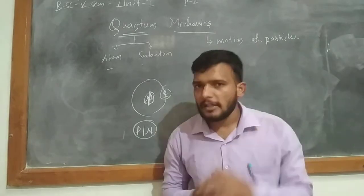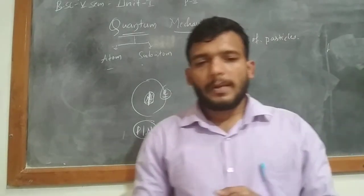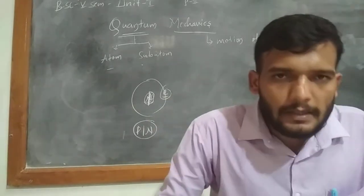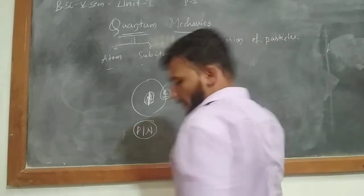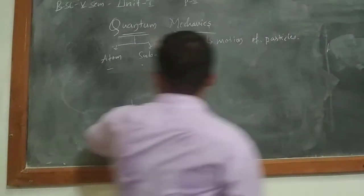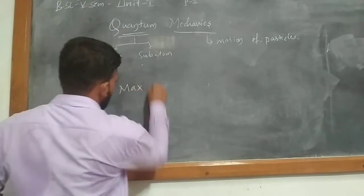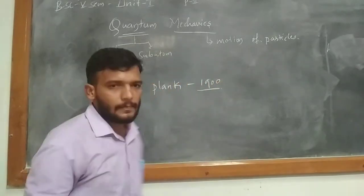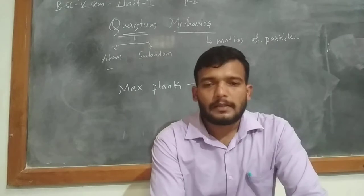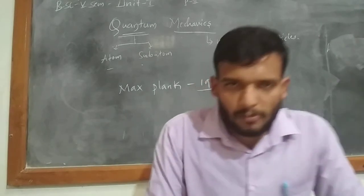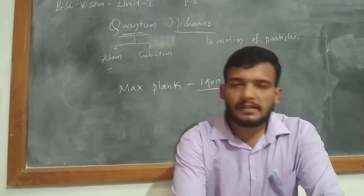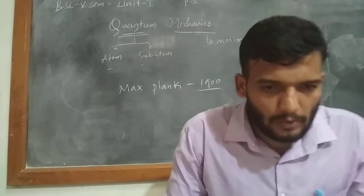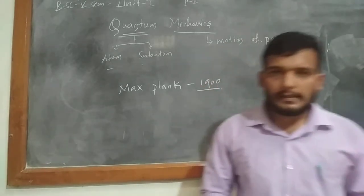In quantum mechanics, you mainly study about the microscopic particles. This quantum mechanics was initially first discovered by Max Planck. Max Planck followed the quantum theory, and this explains about the emission and absorption of black body radiation. It is not continuous energy — it is a discrete energy.